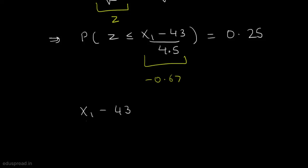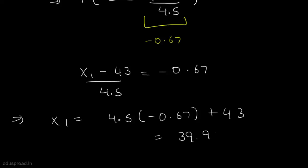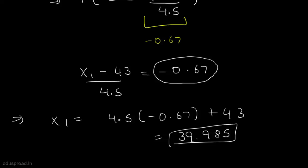So we write: (x1 minus 43) divided by 4.5 equals minus 0.67, which gives x1 equals 4.5 times minus 0.67 plus 43, equal to 39.985. Note that minus 0.67 is an approximate z value. You can use interpolation to find the exact z value corresponding to 0.25, which may slightly change the answer. With this, part B is complete.